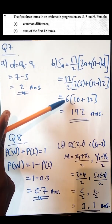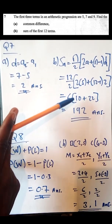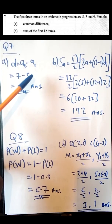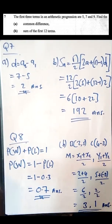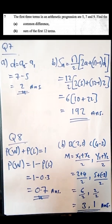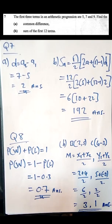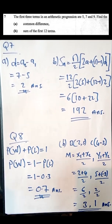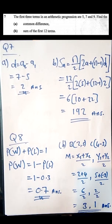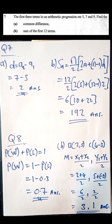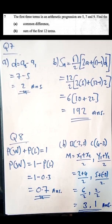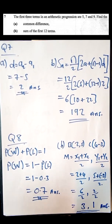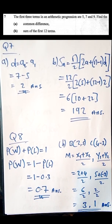12 divided by 2 is 6. 2 times 5 is 10. 12 minus 1 is 11. 11 times 2 is 22. 10 plus 22 is 32. 32 multiplied by 6 gives 192. So the sum of the first twelve terms is 192. As simple as that.